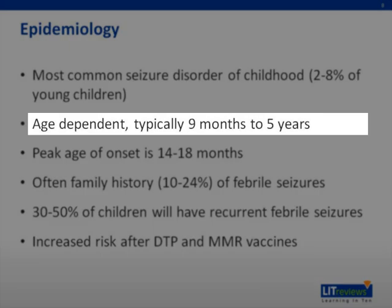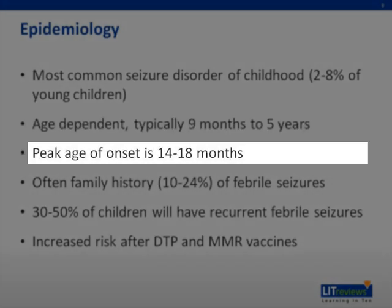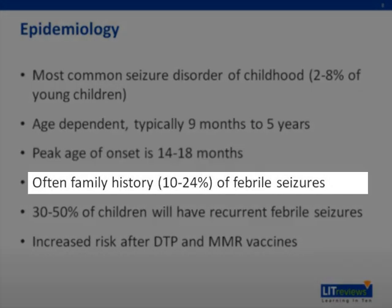There is an age-dependent onset of febrile seizures, typically between the ages of 9 months and 5 years, with the peak age of onset being between 14 and 18 months. There is often a family history of febrile seizures, with 10–24% of patients having a first-degree family member with a history of febrile seizures. Most genetic studies have found a polygenic inheritance pattern, but a small number of families have been found to exhibit autosomal dominant inheritance.